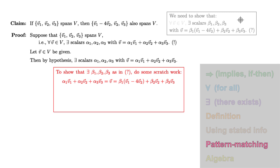Both sides involve the three vectors v1, v2, and v3. So if we collect coefficients for these vectors on both sides, we can equate coefficients to see how the alphas and betas relate. Pattern matching, it looks like what we want is beta1 equal to alpha1, beta2 minus 4 beta1 equal to alpha2, and beta3 equal to alpha3.